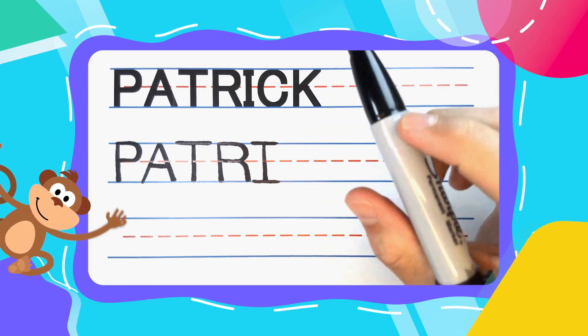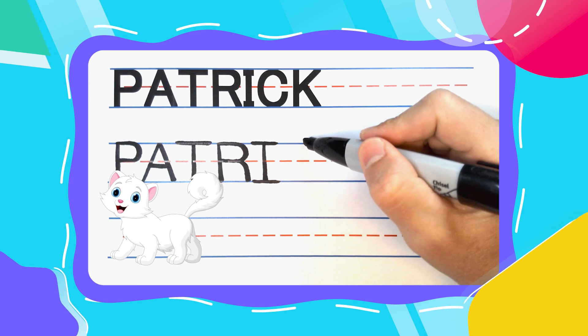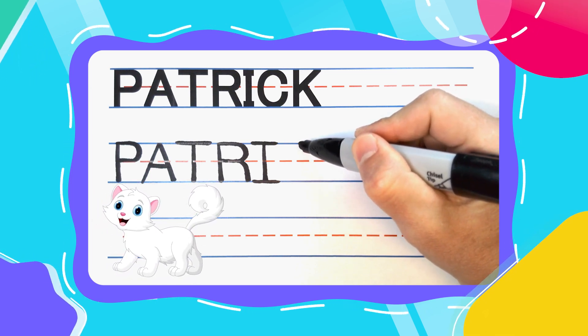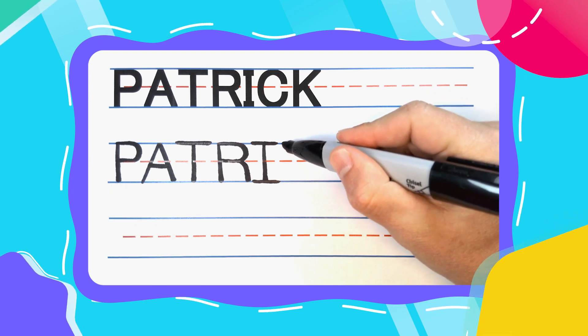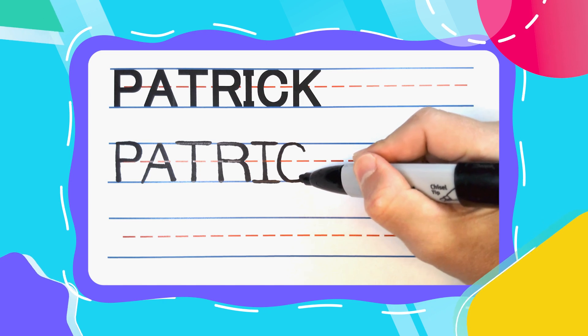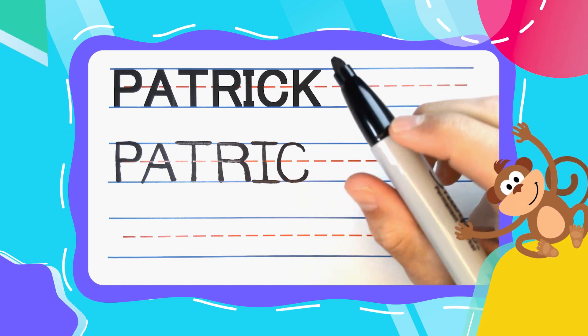The next letter in Patrick is the catching cat C. And catchy C's start just below that top line. Come up and to the left. Touch the top line and do a big curve. Touch the bottom line. Finish up to complete your C.